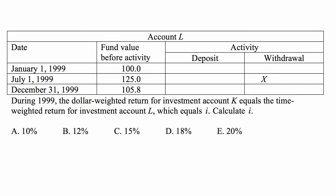Here's the second account, account L. The beginning of the year value is 100, and the end of the year value is 105.8. There is a withdrawal of X on July 1st.